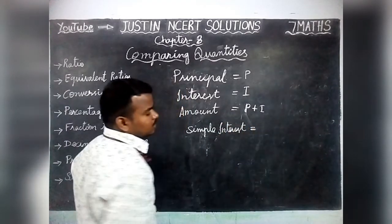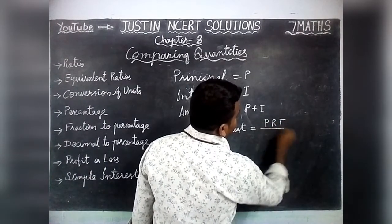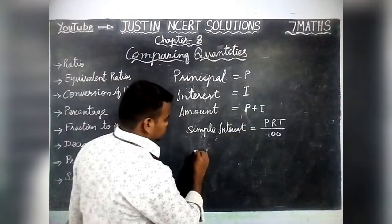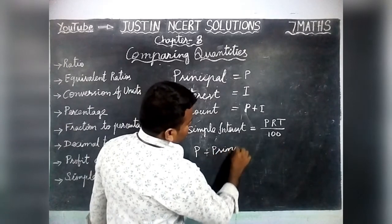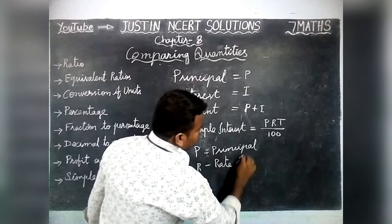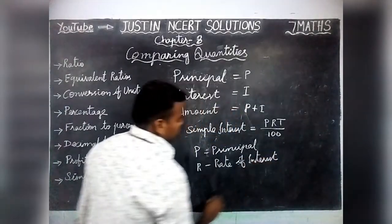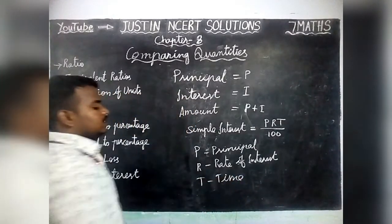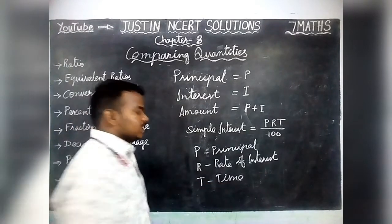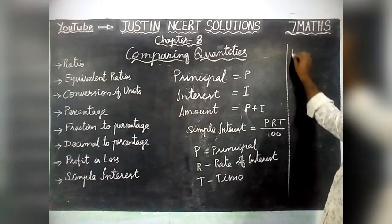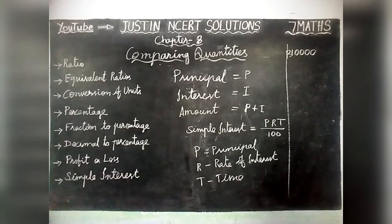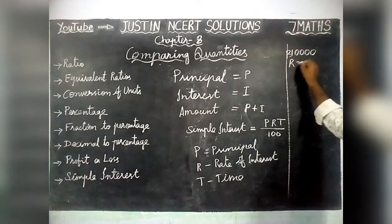To find Simple Interest, there is a formula: SI equals P into R into T divided by 100. P stands for Principal Amount, R stands for Rate of Interest, and T stands for Time — for how many years we borrowed. By using this formula we can find the Interest. For example, we are borrowing 10,000 rupees. P is equal to 10,000 rupees. Rate of Interest R is equal to 5%.